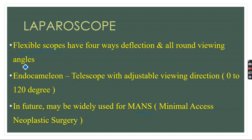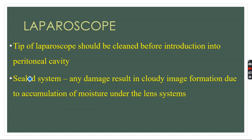There is a telescope known as the endochameleon — a telescope with adjustable viewing direction between 0 and 120 degrees. We can adjust the angle of the tip while operating. Important care points: the tip of the laparoscope should be cleaned before introduction into the peritoneal cavity every time. Also, this is a sealed system, so any damage will result in a cloudy image due to accumulation of moisture under the lens system.